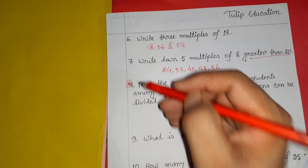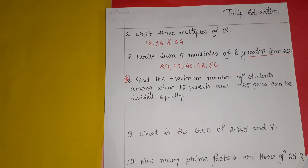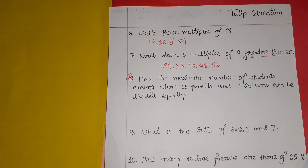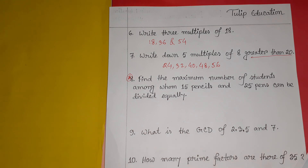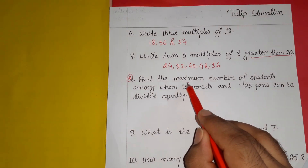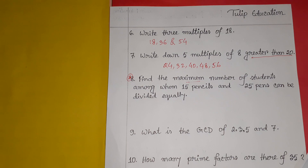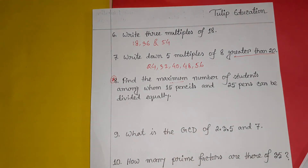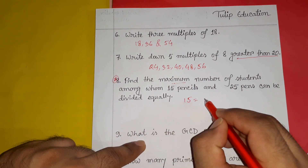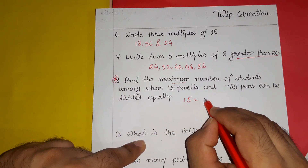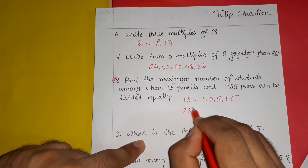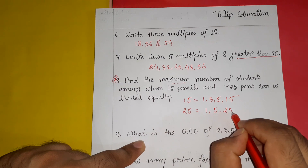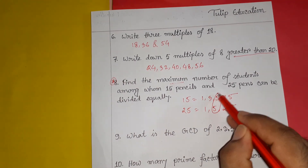Question number 8 is a word problem: find the maximum number of students among whom 15 pencils and 25 pencils can be divided equally. To find the maximum number of students, we use the GCF. The factors of 15 are 1, 3, 5, and 15. The factors of 25 are 1, 5, and 25. The common factors are 1 and 5, so the GCF is 5.